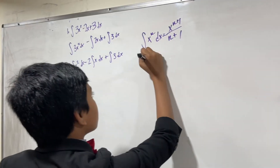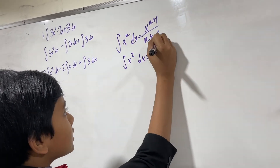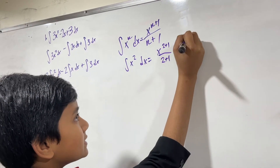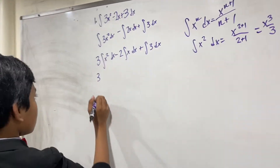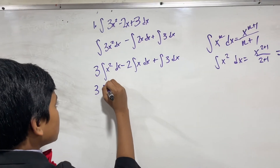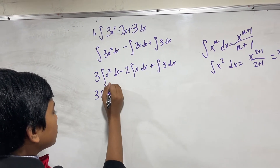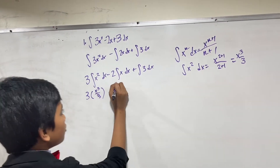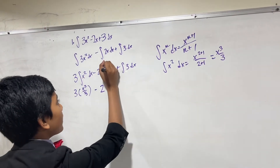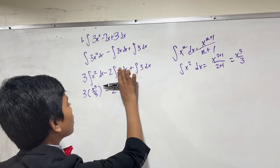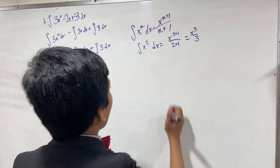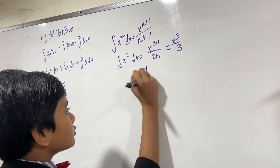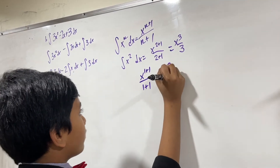So in this case, n is 2, so it's going to be x to the 2 plus 1 over 2 plus 1, so it's x cubed over 3. We have 3 times x cubed over 3, minus 2 times — we follow the same rule, but remember there's a hidden 1 tacked on over here. So if we have a 1 there, then integrating it will give us x to the 1 plus 1 over 1 plus 1, which gives us x squared over 2.